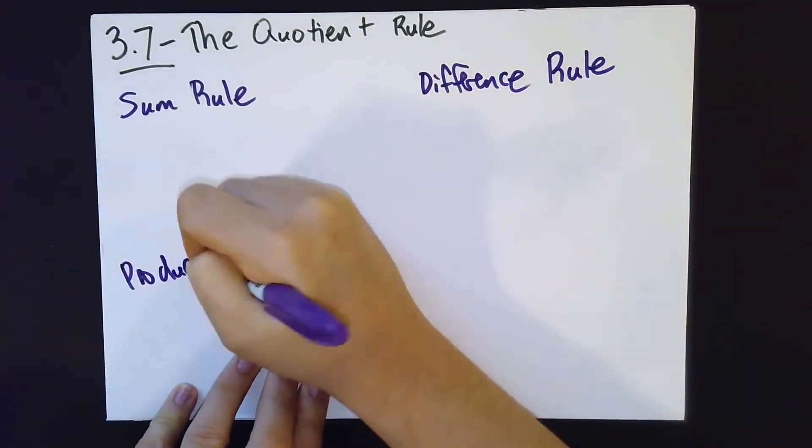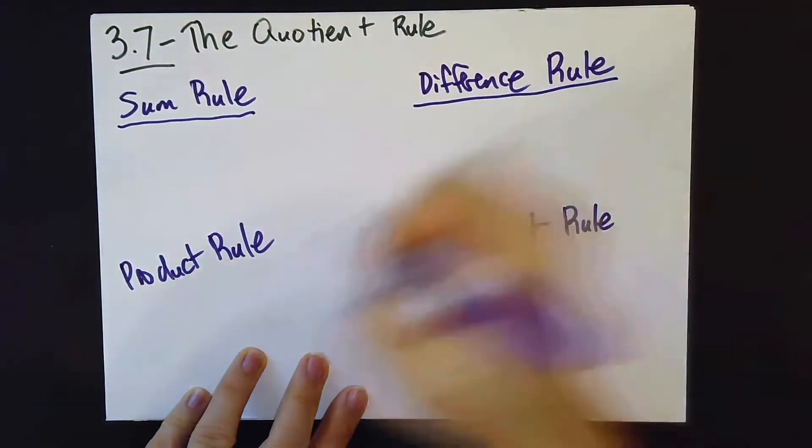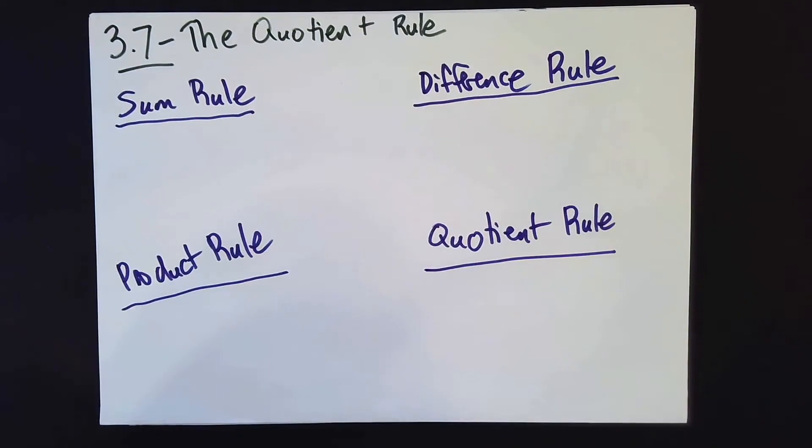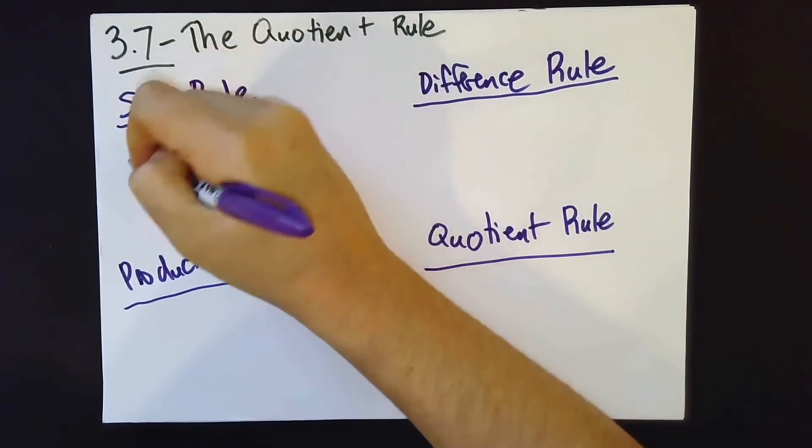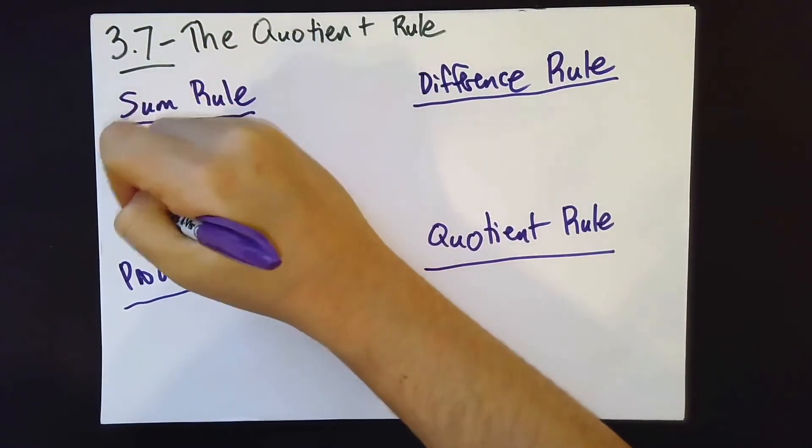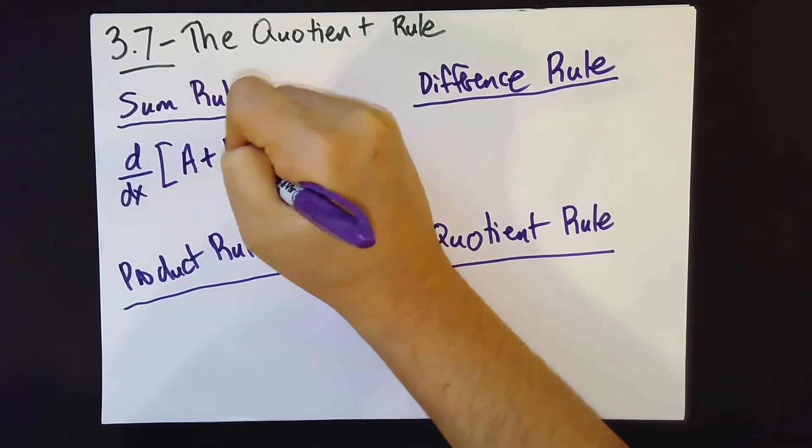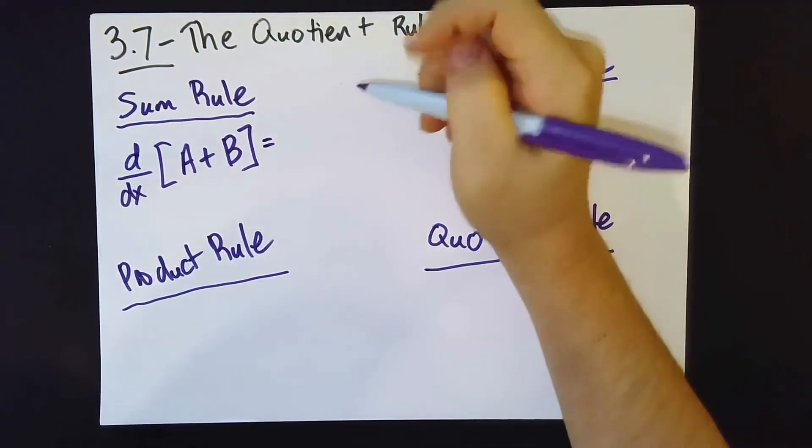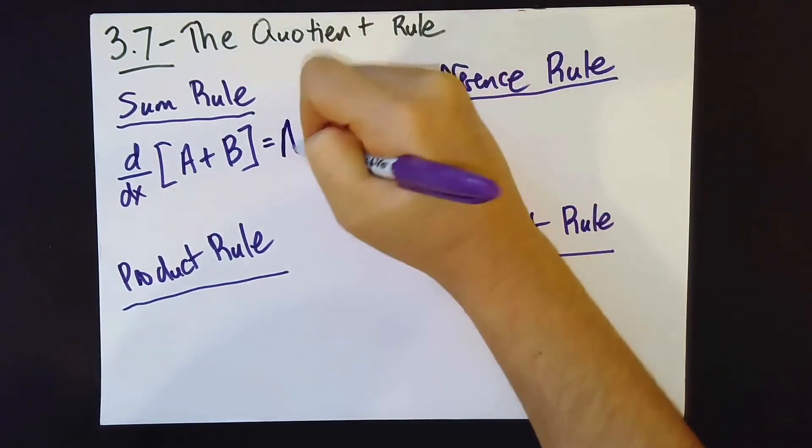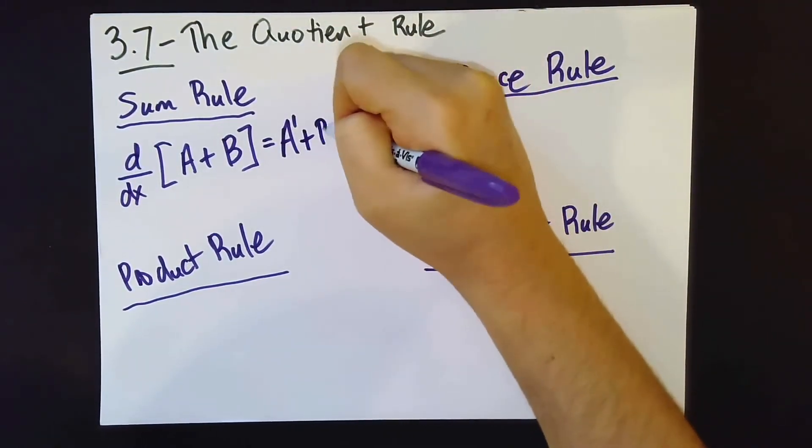So there are four operations, and we've talked about three of them. Namely, we've said, what happens if you have the derivative of thing a plus thing b? Well, then the sum rule tells us that we get the derivative of a plus the derivative of b.